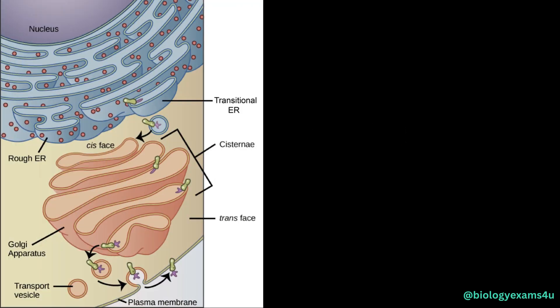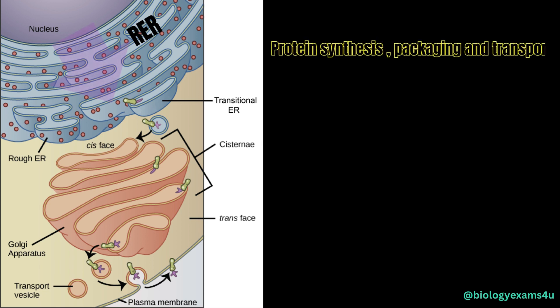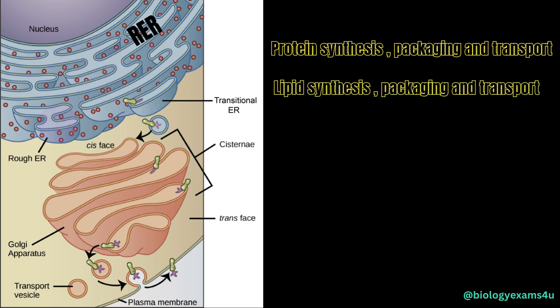Let us discuss the functions of the endomembrane system. It is essential for the proper functioning of eukaryotic cells and plays a role in a wide variety of cellular processes. First, protein synthesis and modification occurs through the RER, which is the site of synthesis of membrane and secretory proteins, with protein folding and modification taking place in the ER and Golgi apparatus. Second is lipid synthesis — the SER is especially involved in the synthesis of membrane lipids like phospholipids and cholesterol. Third is secretion: proteins and lipids destined to be secreted are packaged into vesicles in the Golgi, properly tagged, and transported to different locations or to the plasma membrane.